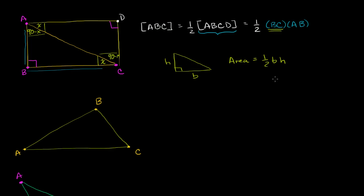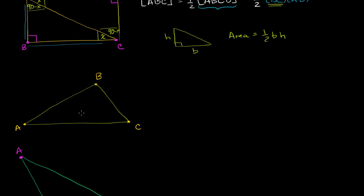Now let's think about it for other types of triangles that aren't necessarily right triangles. Here I have a kind of an arbitrary triangle ABC. To approach figuring out its area, what I want to do is split this up into two right triangles. So what I'm going to do is drop a perpendicular from B — literally drop something straight down from here — and that line is going to be perpendicular to the base AC. Let me call that point D. Now we've turned that one triangle into two right triangles.